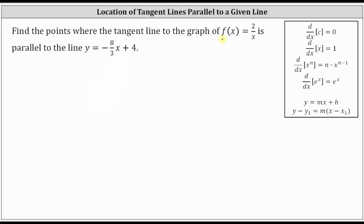We want to find the points where the tangent line to the graph of f(x) = 2/x is parallel to the line y = -8/3 x + 4. Remember, if lines are parallel, their slopes are equal, which means we're trying to find the points on the graph of f(x) = 2/x where the slope is equal to -8/3. We'll set the derivative of f(x) equal to -8/3 and solve for x. This gives us the x-coordinates, and then we'll evaluate the function at those x-values to determine the y-coordinates.